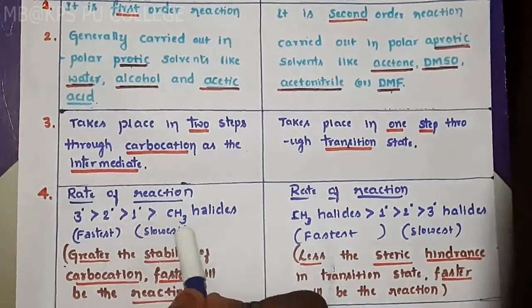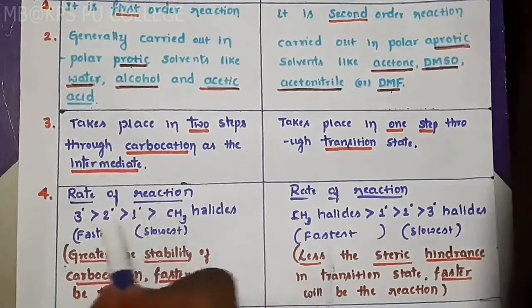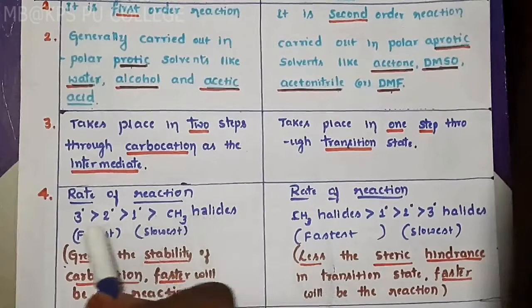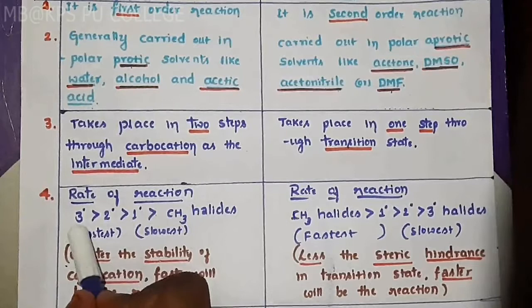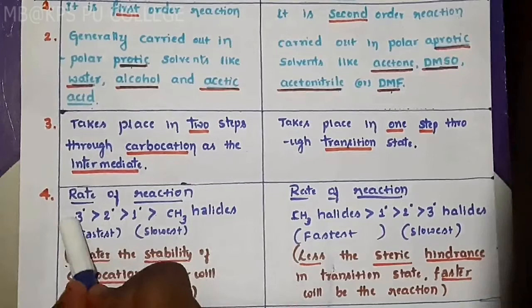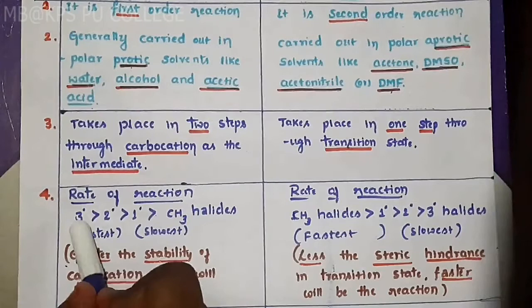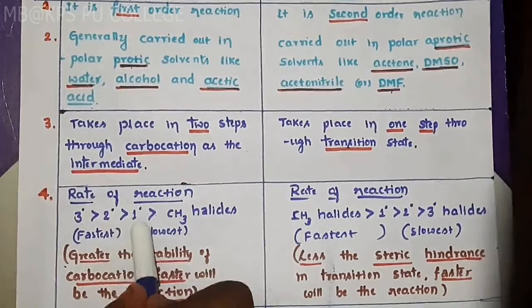Remember: carbocation stability depends on hyperconjugation. Tertiary carbocation shows maximum hyperconjugation, then secondary, then primary. Because tertiary shows the most hyperconjugation, tertiary alkyl halides are most reactive in SN1, followed by secondary, then primary, then methyl halides.